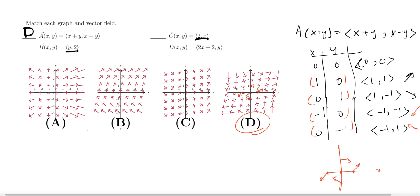If y is positive, then the first component goes in a positive direction for x. If y is negative, the first component goes to the negative direction for x.